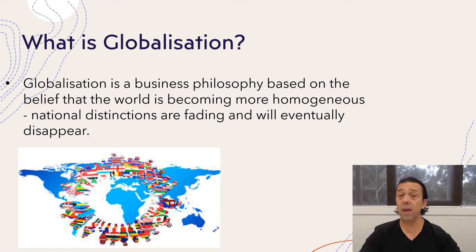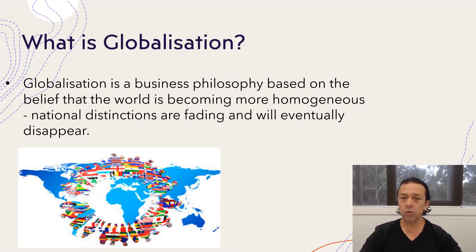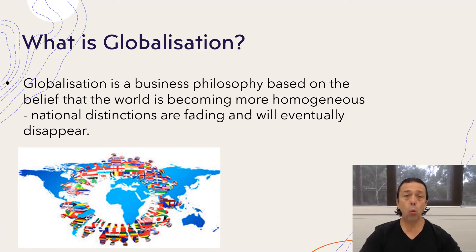Globalization is a business philosophy based on a belief that the world is becoming more homogeneous. In other words, national distinctions as we know them are fading away and will eventually disappear. National distinctions include things like culture and language. For example, the word 'Google' is being accepted in many languages as a word representing some form of online search.